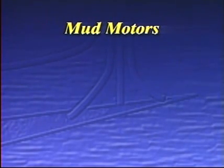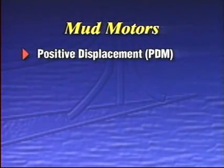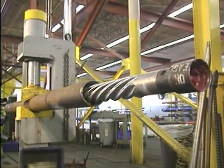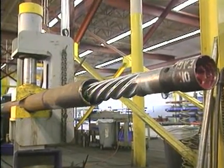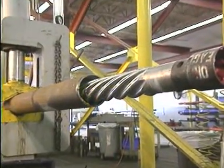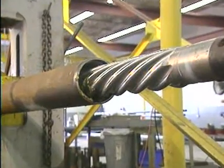Downhole motors are commonly known as mud motors because they're driven by the circulation of the drilling mud. There are two basic types of mud motors: positive displacement motors and turbine motors. The positive displacement motor, or PDM, is easily the most versatile tool for building or maintaining hole angle.